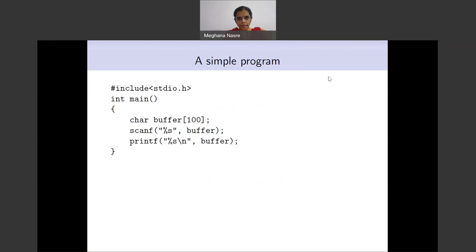Let's recall our very normal program that we are used to writing, which is just scanning something from the user and printing it to the standard output — scanning it from the standard input and printing it to the display or the standard output. This program is very familiar. Towards the end, we are coming to the kind of the first program. But let's recall a few things that we want to talk about.